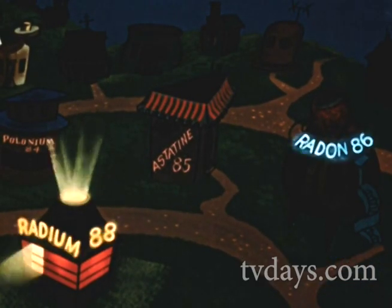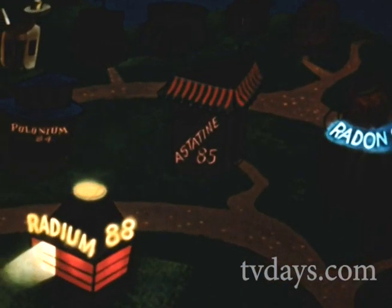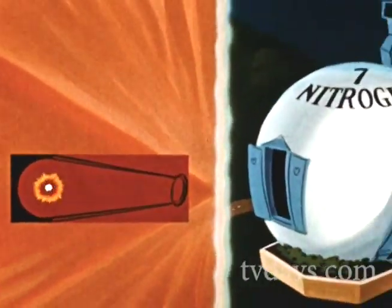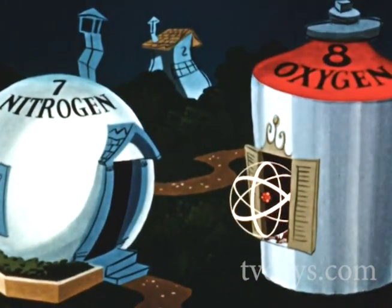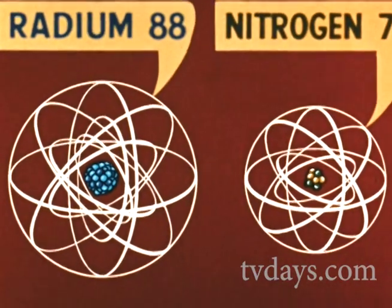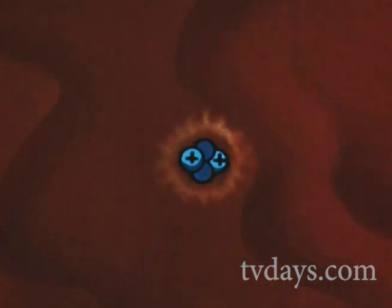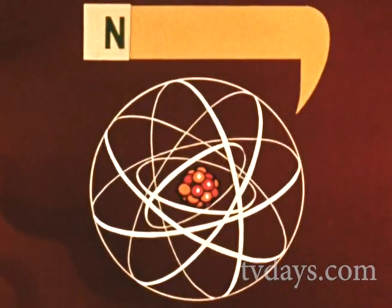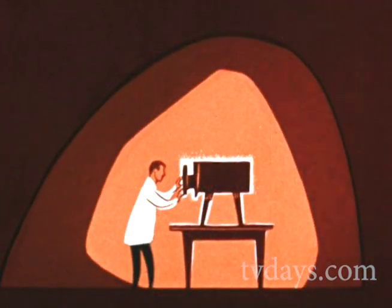Its discovery gave men of science an idea. If an atom could change itself, why couldn't man change an atom? Using as bullets the very particles which radium threw off, a noted British scientist bombarded nitrogen and converted it to oxygen. In terms of individual atoms, this is what happened. The radium nucleus threw off an alpha particle consisting of two protons and two neutrons. One of the protons was absorbed into the nitrogen nucleus, turning it to oxygen. This was artificial transmutation. Man changing the elements.